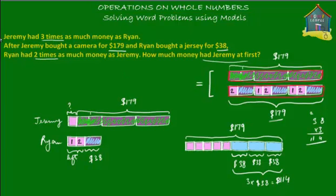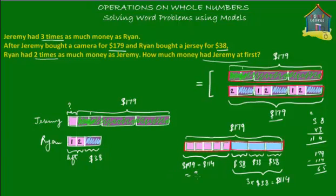So the blue part equals $114. Then how much are all the pink boxes equal to? The pink boxes combined equal $179 minus $114. That equals $65. So five pink boxes together equal $65 — five units equal $65. Therefore, one unit equals 65 divided by 5, which is $13.